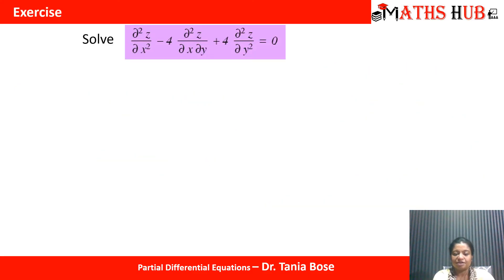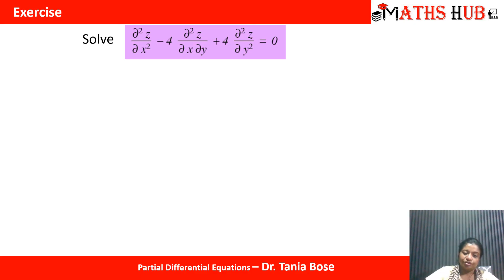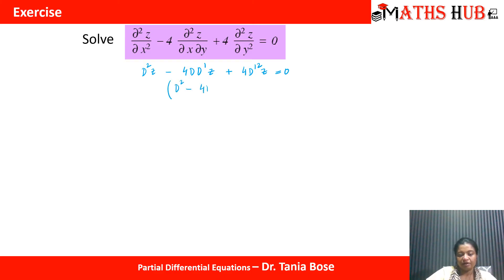Next, solve: ∂²z/∂x² − 4(∂²z/∂x∂y) + 4(∂²z/∂y²) = 0. Converting to symbolic form gives (D² − 4DD' + 4D'²)z = 0.